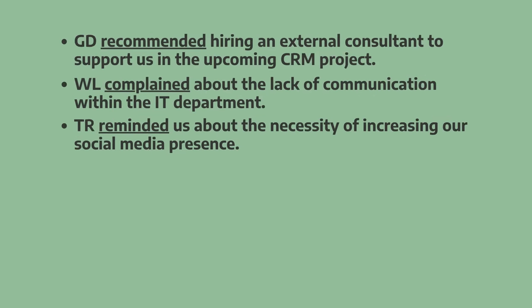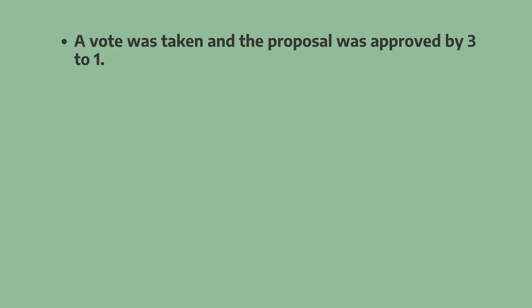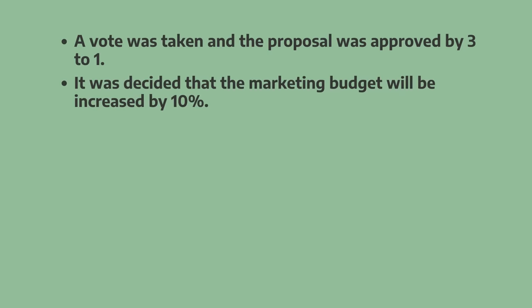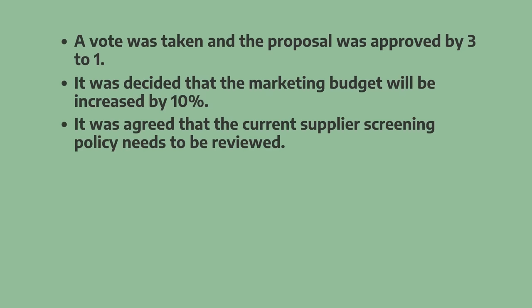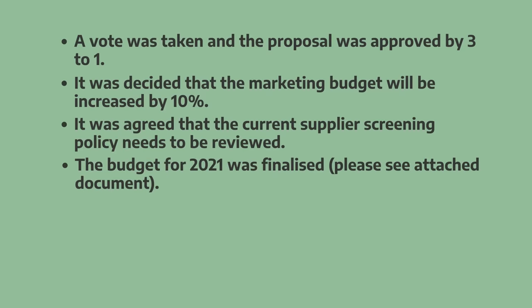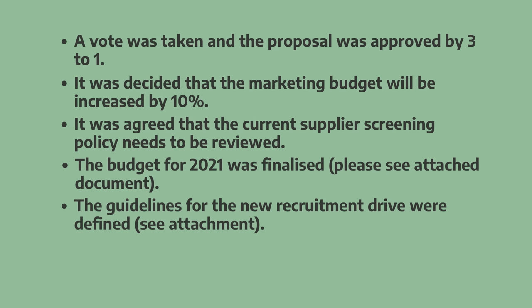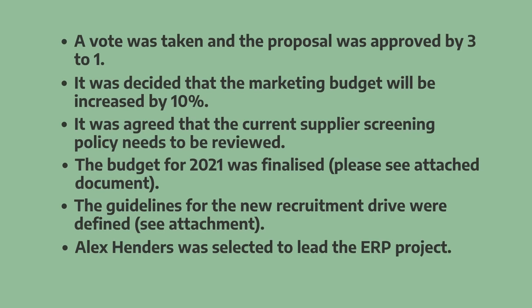Now let's look at some different ways to write about key decisions made: 'A vote was taken and the proposal was approved by three to one.' 'It was decided that the marketing budget will be increased by 10%.' 'It was agreed that the current supplier screening policy needs to be reviewed.' 'The budget for 2021 was finalized — please see attached document.' 'The guidelines for the new recruitment drive were defined — see attachment.' 'Alex Henderson was selected to lead the ERP project.' Notice that the past simple passive form is used in each example — we form this by using 'was' or 'were' followed by the third form of the verb, the past participle.